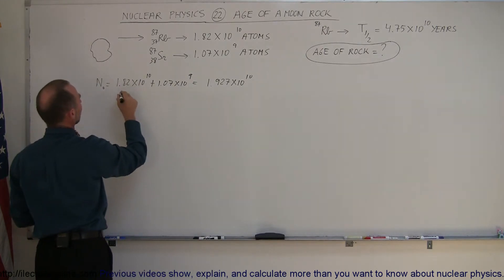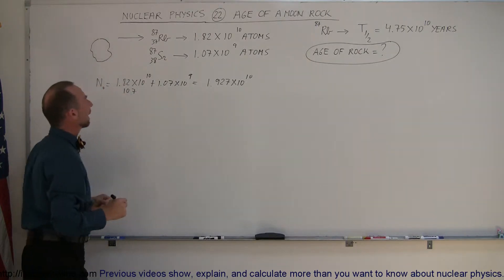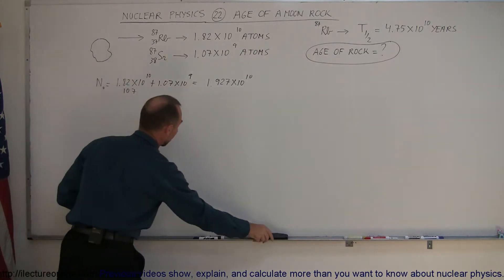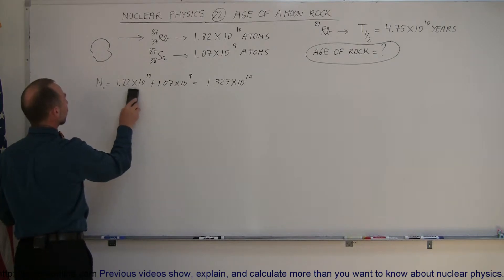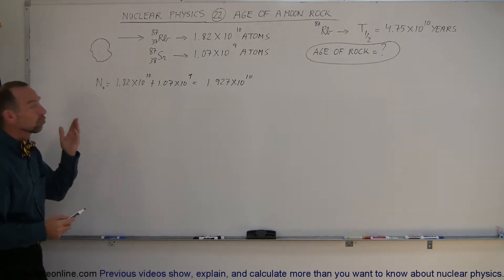Because what we do here is we just move this over by one decimal point. We get 1.07 like that. And when we add it, we get 1.927. All right, so that works. So that's the total number of initial rubidium atoms. And those have now decayed into strontium.